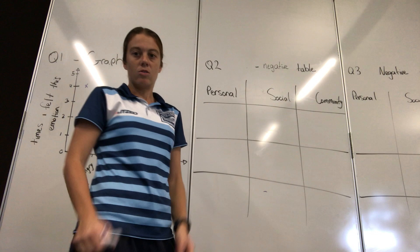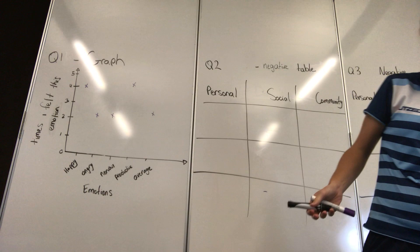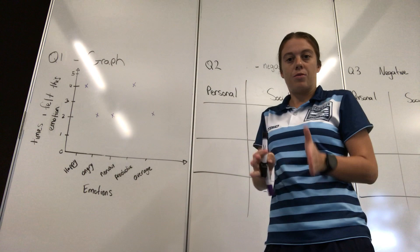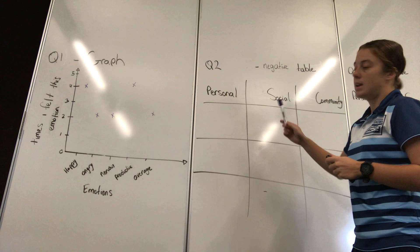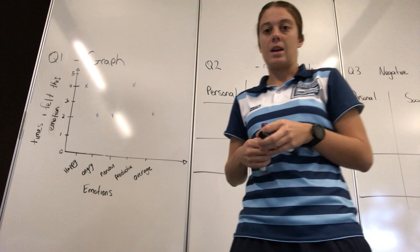The three categories are personal, social, and community. Personal is individual — anything that has affected you yourself only, or something that has made you happy because you've done it, goes in the personal category. Things that make you unhappy through your social — so obviously your friends, family, and peers — go in social. Community is your wider group: sports groups, football clubs, all those types of things.